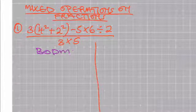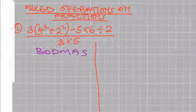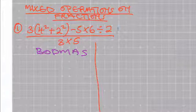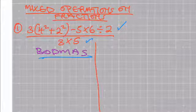So how do we go about that? That means in this case you start working the numerator first, then you come to the denominator. Let's start with the numerator, applying the BODMAS rule.